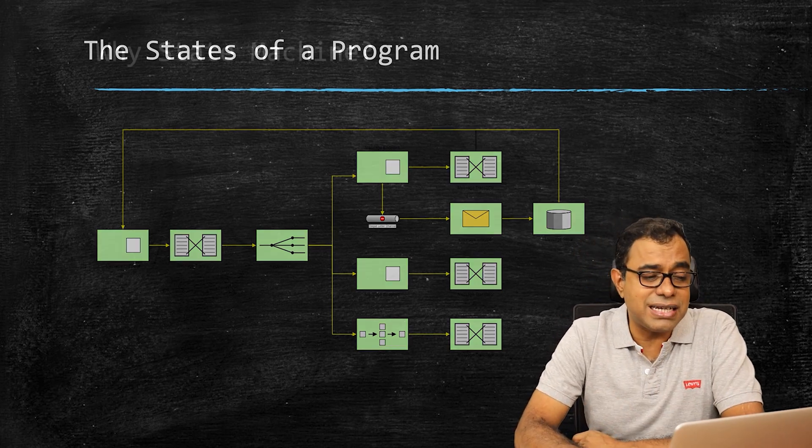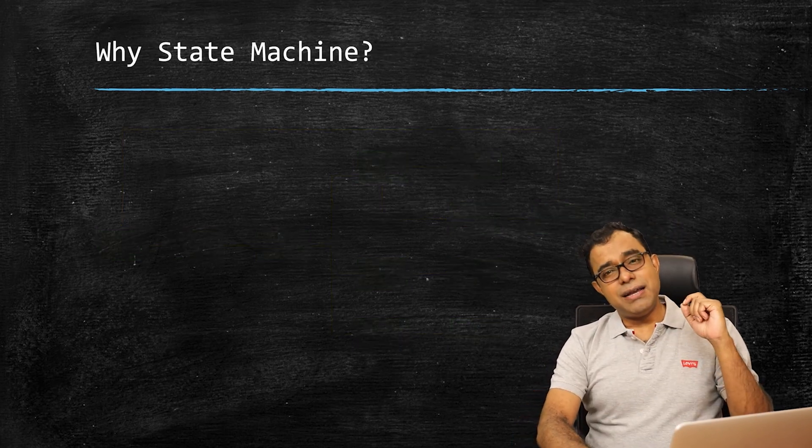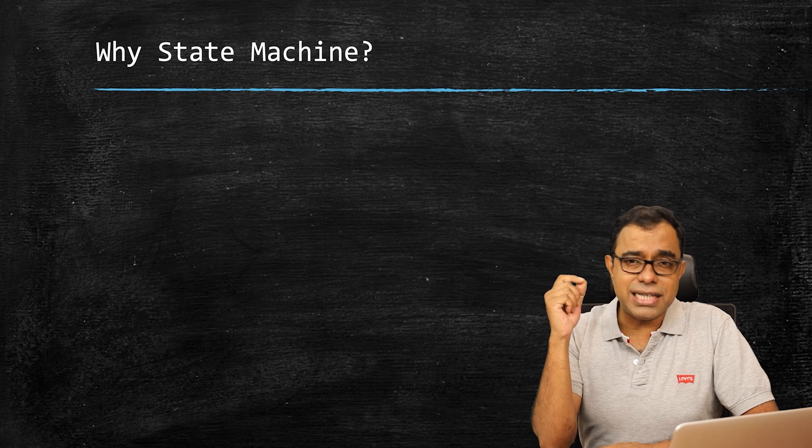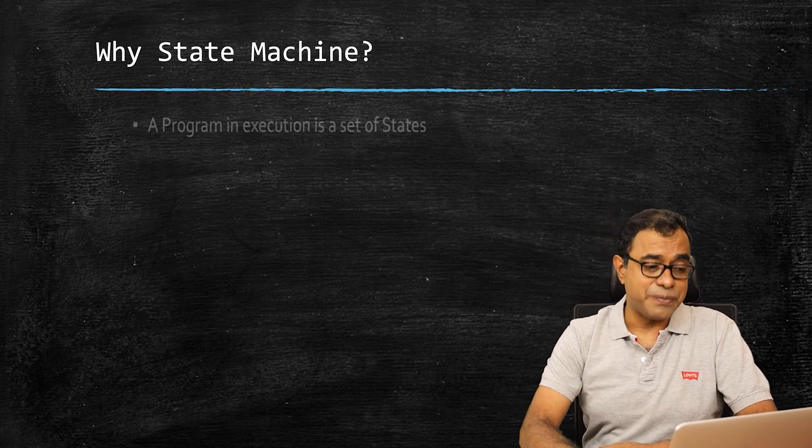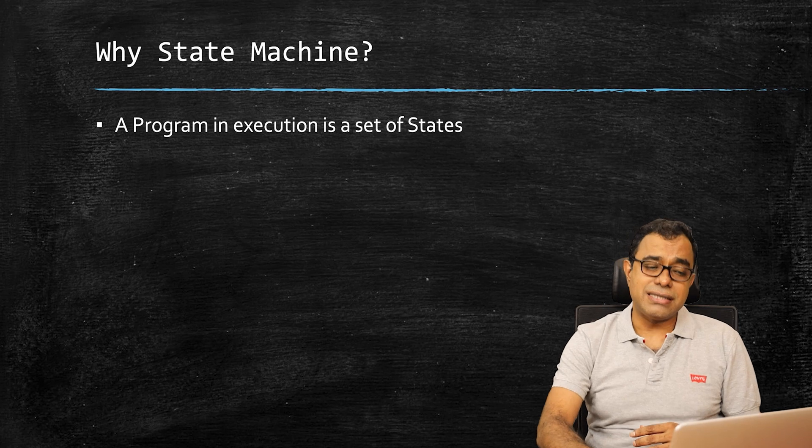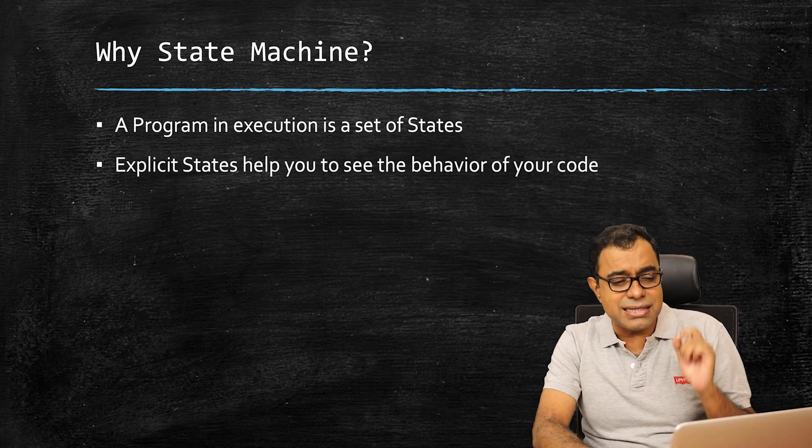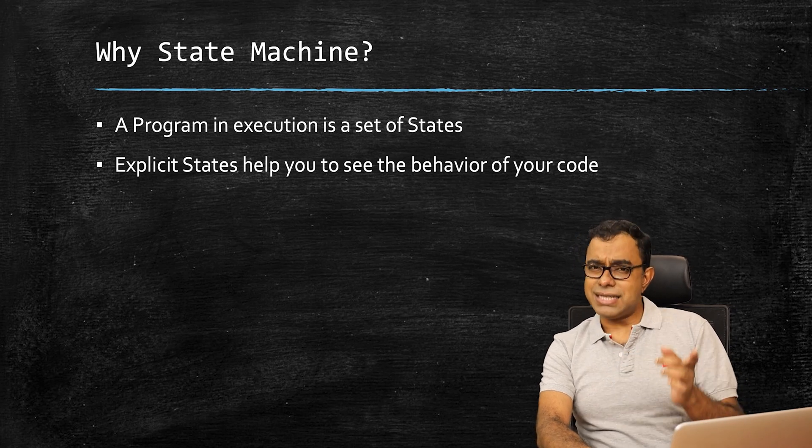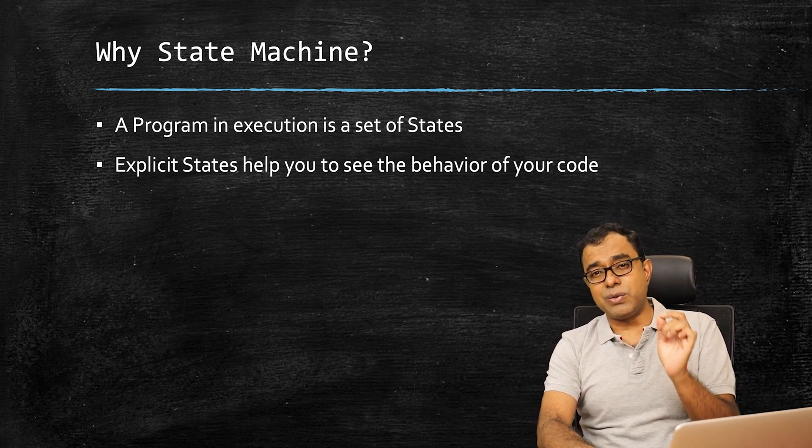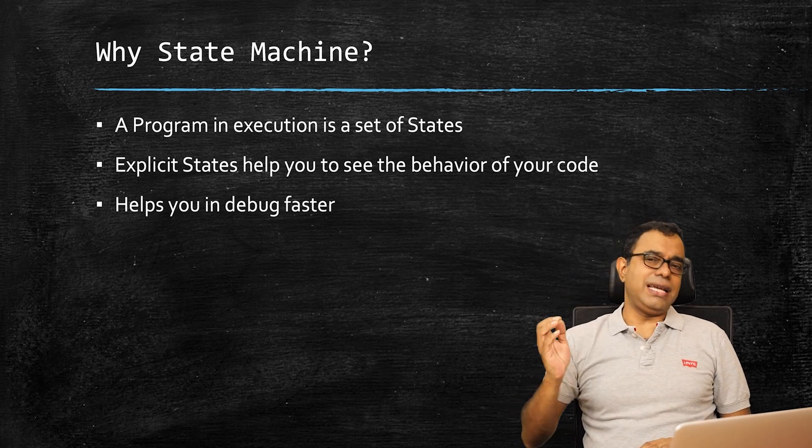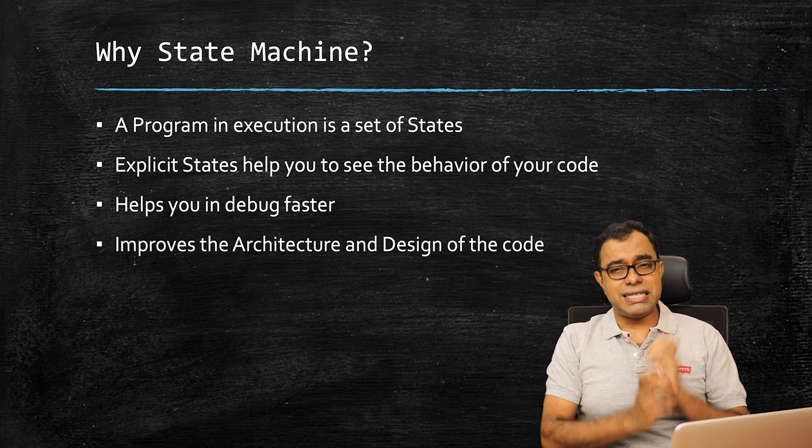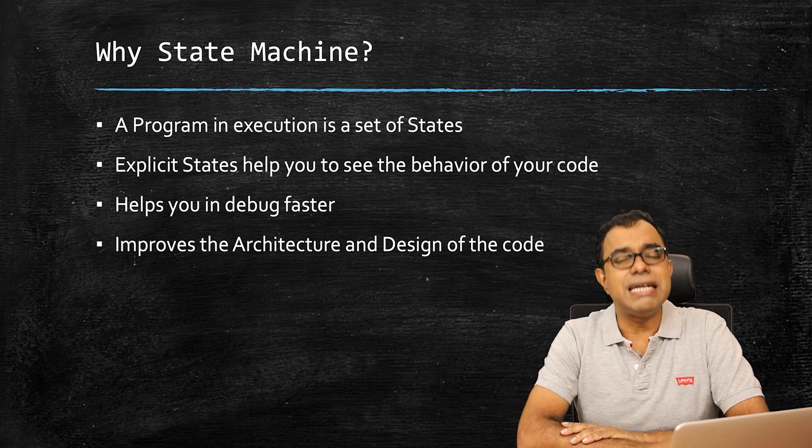I will come back to this picture in one second, but let's talk about why state machines. Why am I so much insisting on writing state machines, even when I am saying that whether you are writing it explicitly or not, implicitly you are anyway using state machines. So as I have told you earlier, anything that stays in the memory, no matter which platform you are working on, is a set of states. Explicit states help you to see the behavior of your code: happy state, sad state. Your program is in state A, state B, state C. You know what is the expected behavior of the code in this state. Most important thing which saves the day: it helps you to debug faster, and it improves the architecture and design of your code. Believe me, try it out.